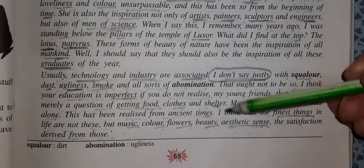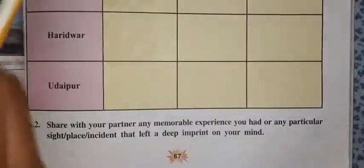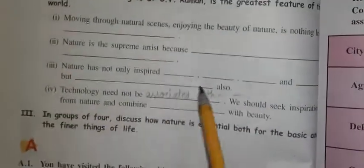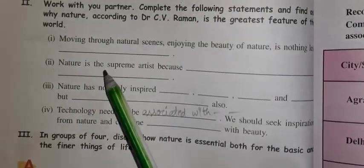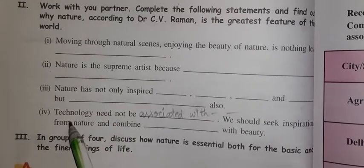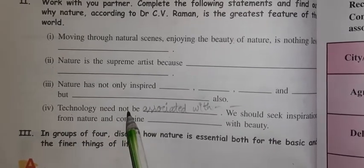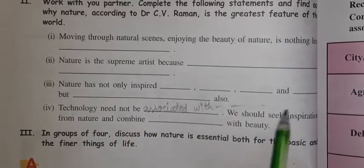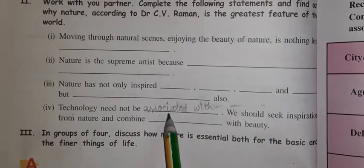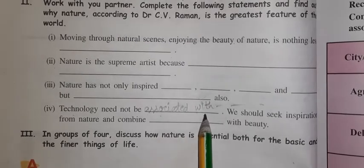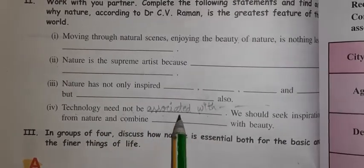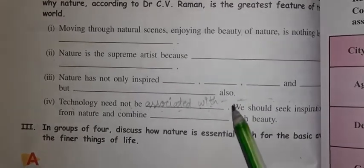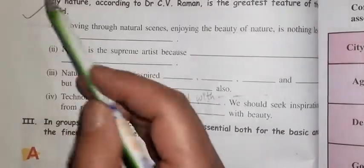On the basis of this extract, you will try to fill in the blanks in these sentences. You have questions 1, 2, 3 — those are simple. For the fourth one, the hint is: 'technology need not be associated with' — you need to find the words from the passage and fill them in. Technology need not be associated with — look at the words in the passage behind and fill in the blanks. You will try to do this part.